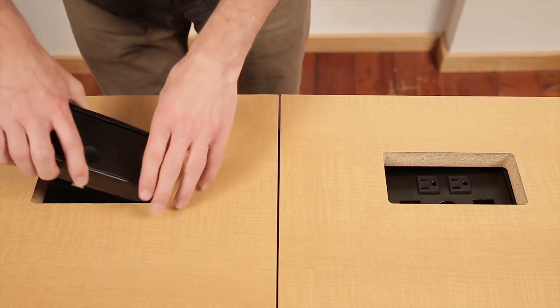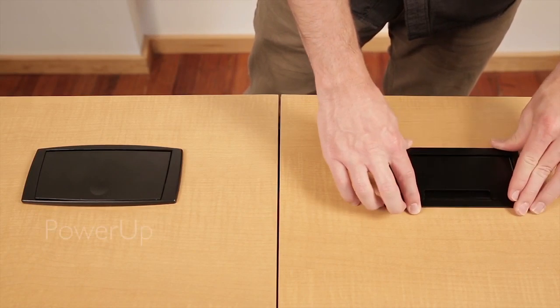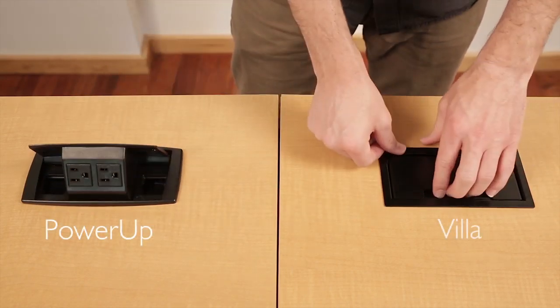The power modules consist of an under-surface receptacle designed to be used inside various KI tables and desks, the KI power out module, and the villa power module.